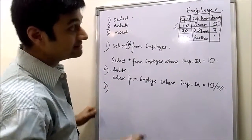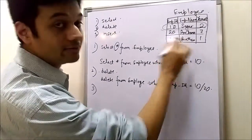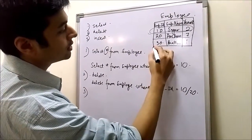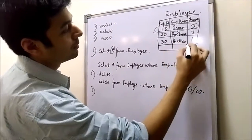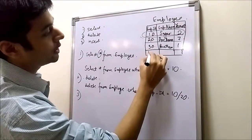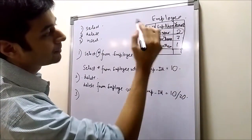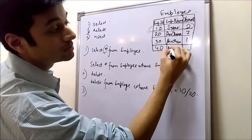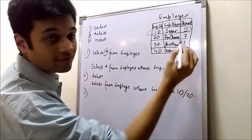The third one is inserting some values in this table. Like if you want to insert one more row, that is employee is 40, employee name as Mamta, years of experience 5.